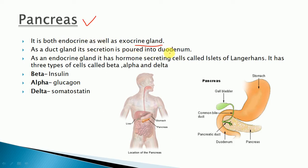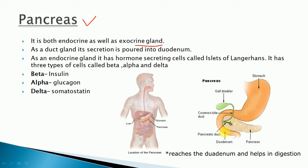Here you can see the location of the pancreas in the human body. If you zoom in, this is the pancreas and this is the pancreatic duct. As an exocrine gland, the secretion travels through this duct and reaches the duodenum. As an endocrine gland, the pancreas has certain hormone-secreting cells.